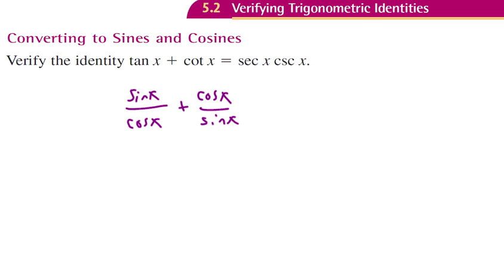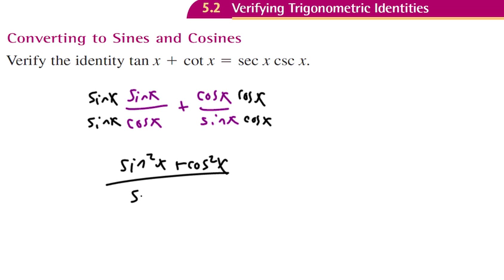Well, we have two fractions, so let's go ahead and get a common denominator. So I'm going to multiply this side, top and bottom, by sine of x. And I'm going to multiply the right side by cosine of x. So sine and sine gives us our sine squared of x. Cosine, cosine, it's going to give us cosine squared of x. And that's going to be all over our common denominator of sine of x, cosine of x.